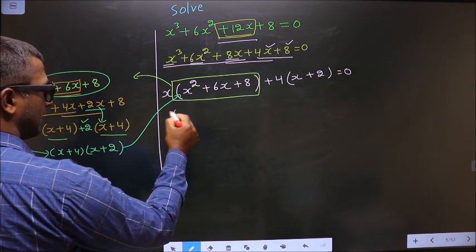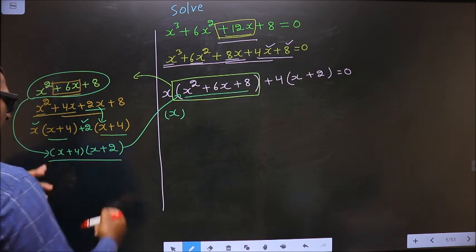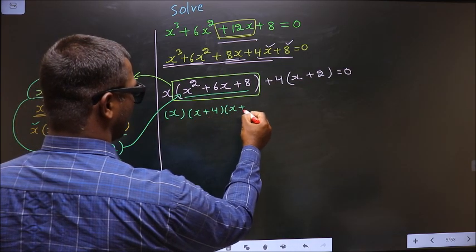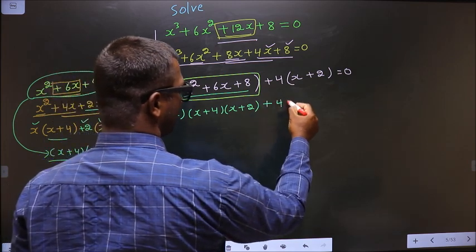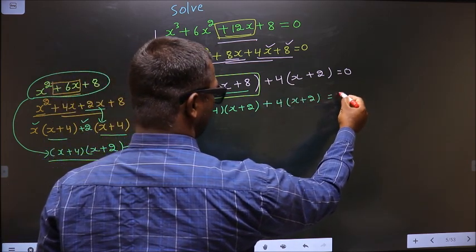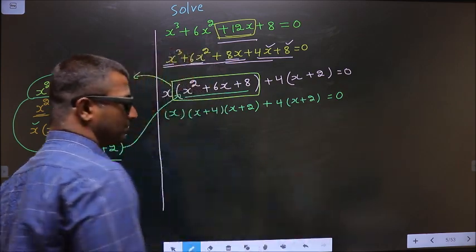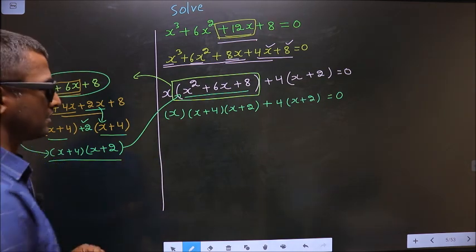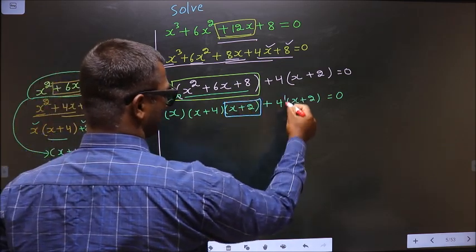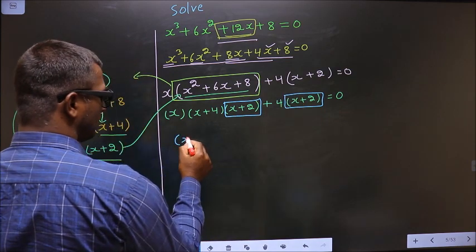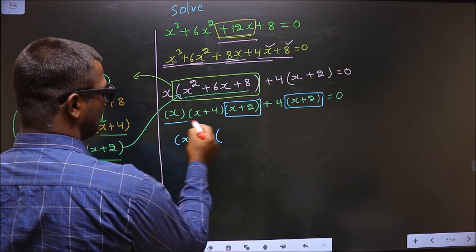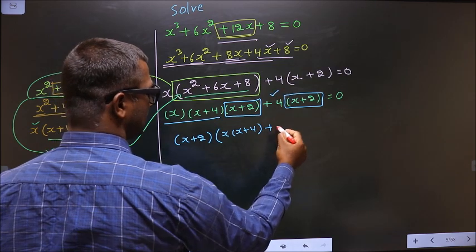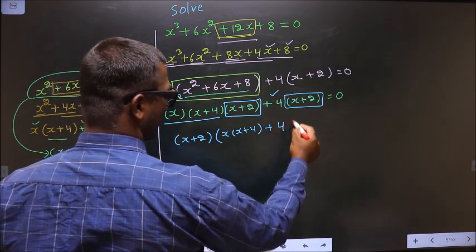So here we have x, and in place of this quadratic, now I will write x plus 4, x plus 2. So we have x plus 4, x plus 2, plus 4, x plus 2, equal to 0. Now from this entire equation, what can you take out common? It is x plus 2. So here you are left with x times x plus 4, and here you are left with plus 4, equal to 0.